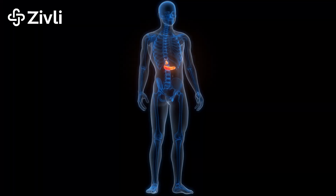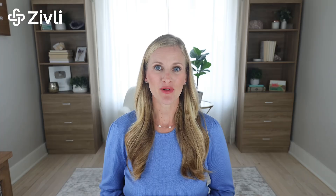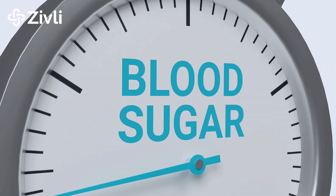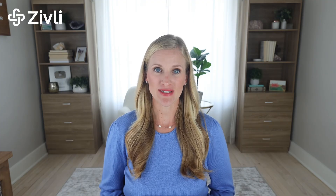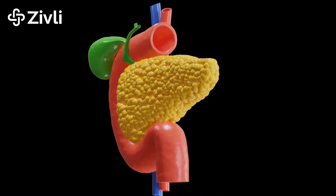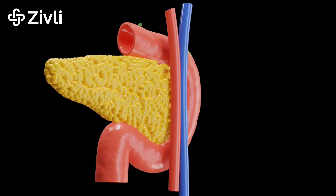Insulin is a hormone produced by the pancreas, and its primary role is to regulate blood sugar levels. When you eat, your blood sugar levels rise from the carbohydrates that are digested, and this signals your pancreas to release insulin. Insulin then flows into the bloodstream, looking to help get that glucose to where it needs to be in the body.